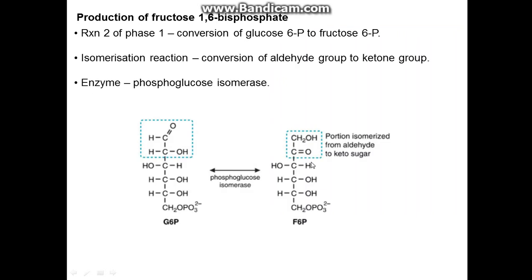Reaction 2 of phase 1 is the conversion of glucose-6-phosphate to fructose-6-phosphate. It's a simple isomerization — it turns the aldehyde group into a ketone group, moving the double bond and the hydroxyl group, converting that aldehyde to a ketone. The enzyme for this is phosphoglucose isomerase.